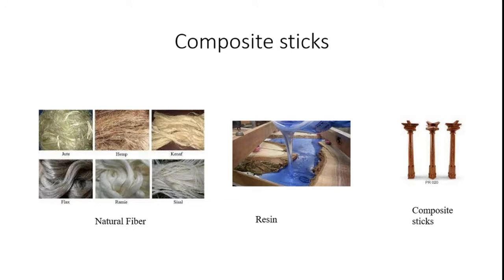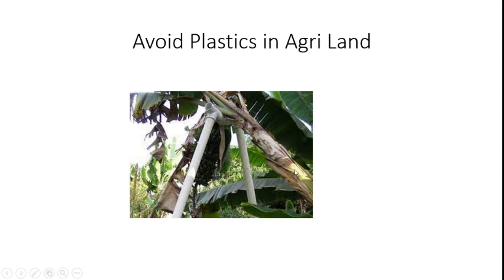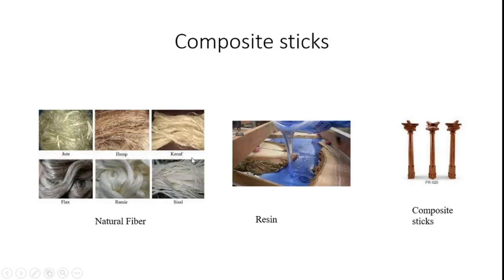We can make composite sticks with the aid of natural fibers and resin. From these two incorporations, we can make composite sticks, and from these composite sticks, we can support the biological element which is the banana stem.